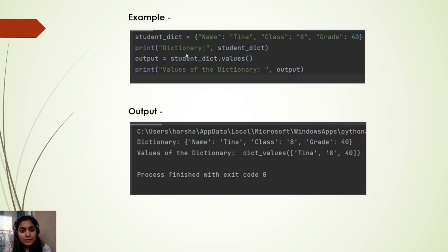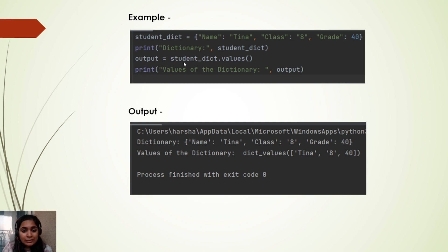Again we have taken the same student dictionary with keys name, class, and grade, and values Tina, 8, and 40. When we write student_dictionary.values(), it is going to give a list of all the values in the dictionary, which is Tina, 8, and 40.